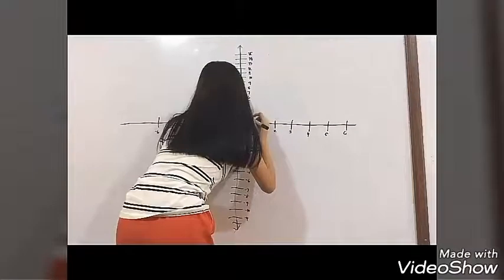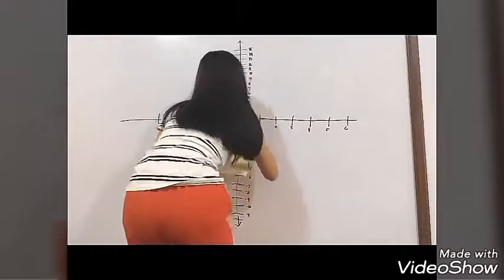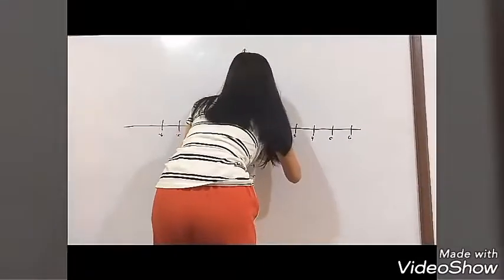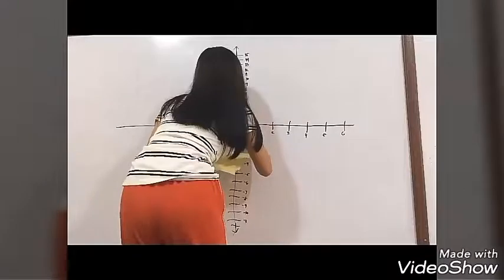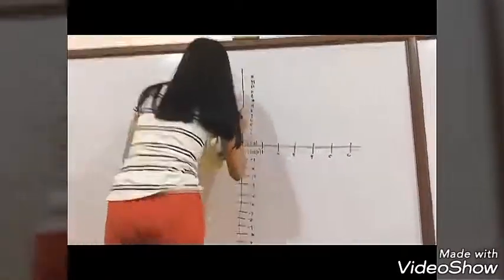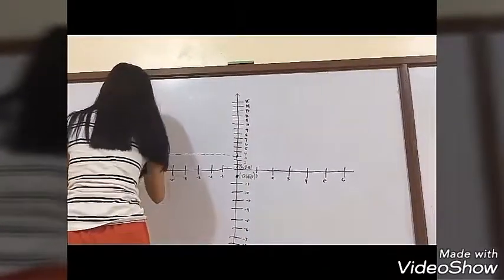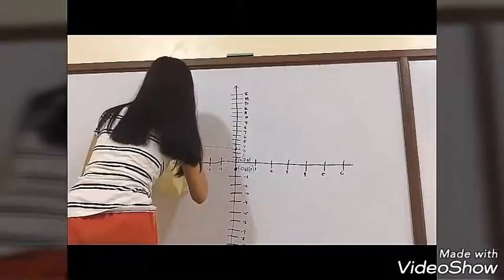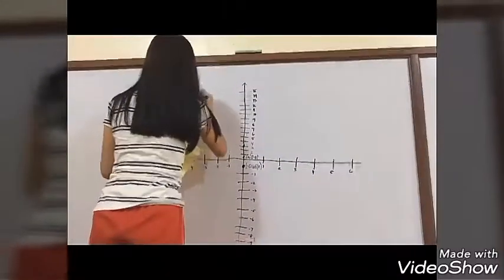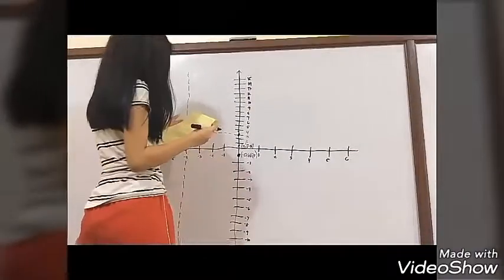Moving on, we will now proceed in graphing the rational function. First, draw a Cartesian plane. Next, plot the x-intercept and y-intercept. The y-intercept is 0.5 and the x-intercept is negative 0.667. Then plot the vertical asymptote at x equals negative 4 and the horizontal asymptote at y equals 3.